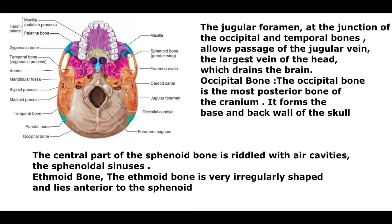Occipital bone. The occipital bone is the most posterior bone of the cranium; it forms the base and back wall of the skull. The occipital bone joins the parietal bones anteriorly at the lambdoid suture. In the base of the occipital bone is a large opening, the foramen magnum, which surrounds the lower part of the brain and allows the spinal cord to connect with the brain.